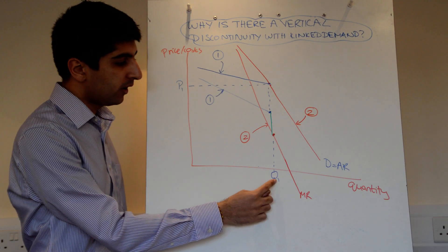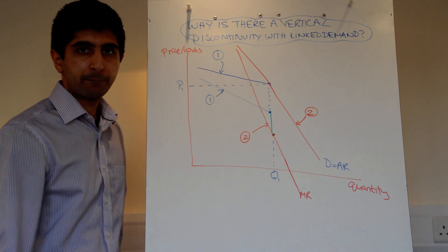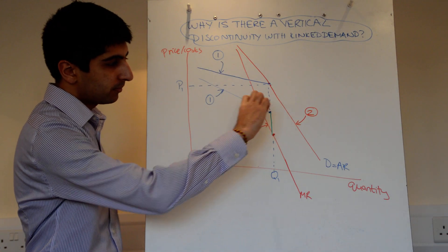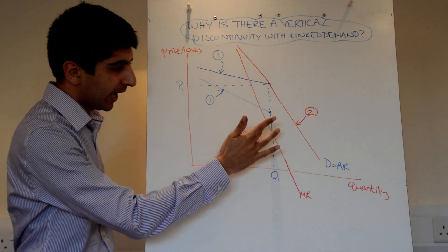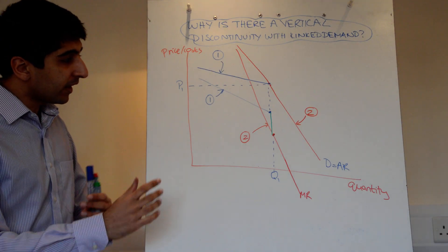So at that level of q1, the red marginal revenue curve starts there, which is why we connect them up with a vertical line, and then we carry on as normal. That's the basic understanding.